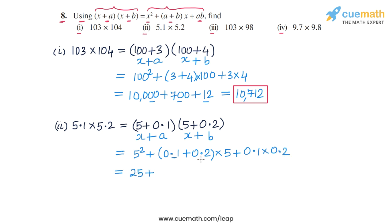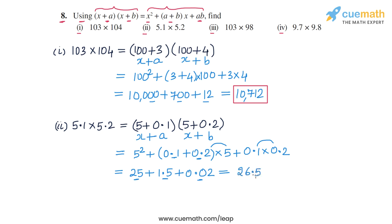So 5² = 25, then 0.1 + 0.2 = 0.3, and 0.3 × 5 = 1.5, and 0.1 × 0.2 = 0.02. So we get 25 + 1.5 + 0.02 = 26.52. This is the value of the second product.